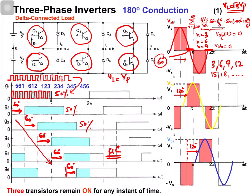The width of these pulses can be changed by changing the duty cycle. If you generate one PWM signal and perform its AND operation with all of the gate signals, you can control the RMS voltage at the output.